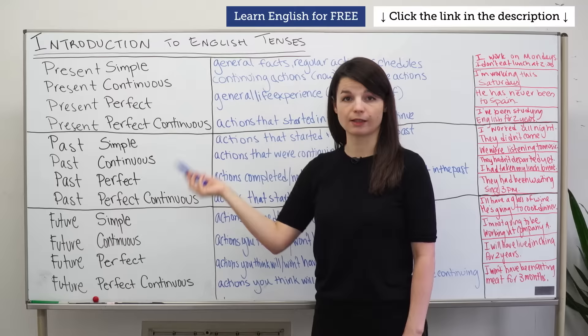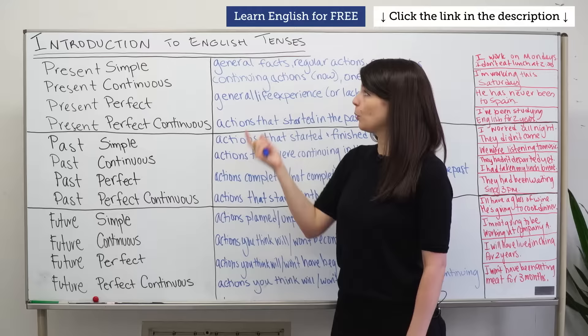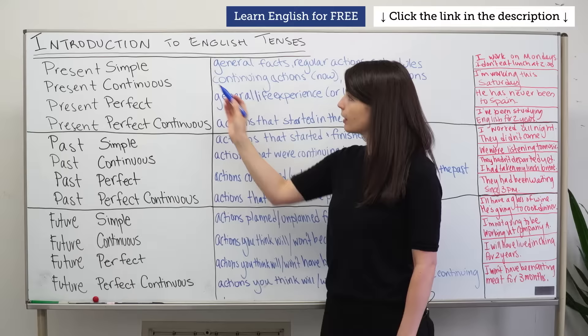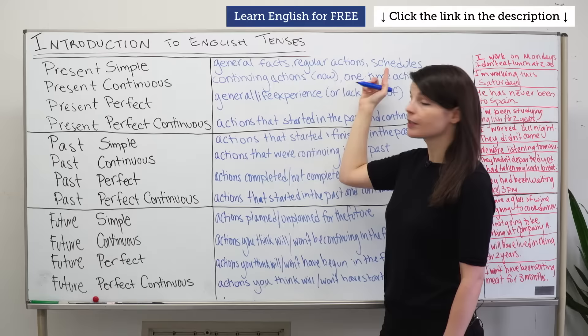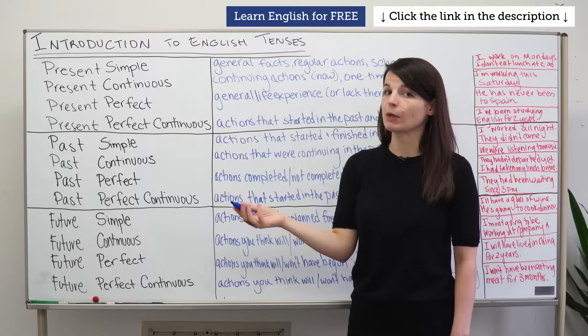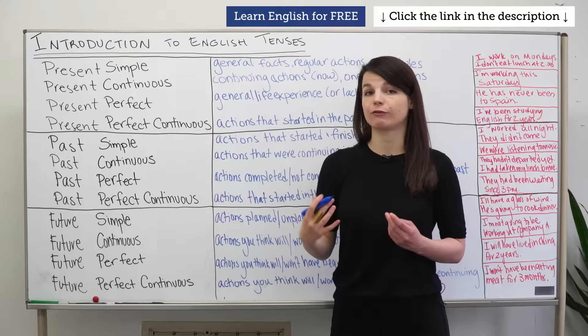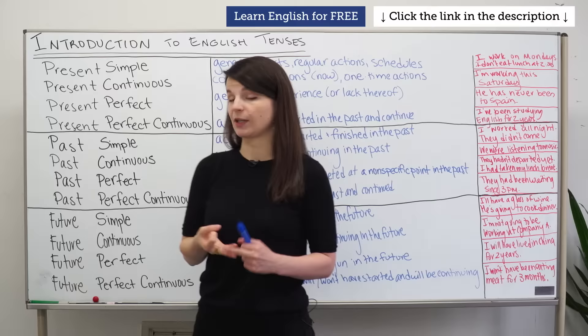Let's begin with the present simple tense. Present simple tense is a tense we use for general facts, for regular actions, and for schedules. This is stuff that doesn't change, like 'he speaks English' or 'she doesn't speak Spanish.' For regular actions, things you do every day or every week. And schedules, like a bus or airplane that maintains a regular schedule.